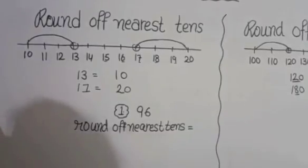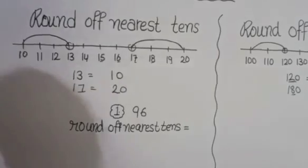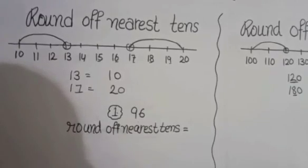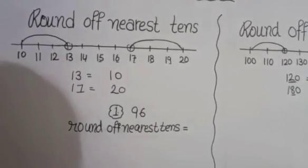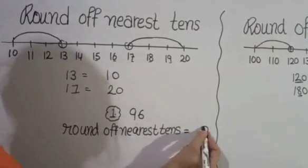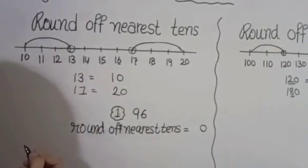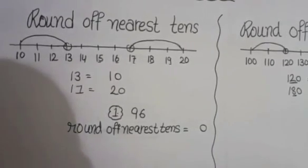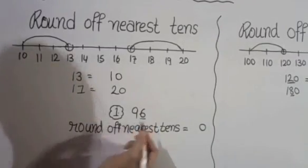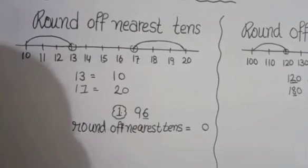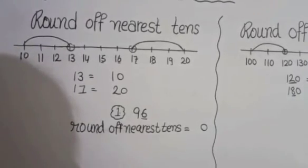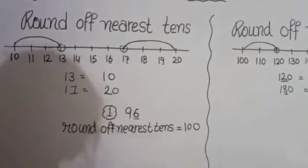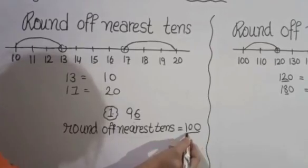Now we have number 96, and we will do round off to nearest 10. If we want to round off to nearest 10, write 0 at the ones place. If we have 5 to 9 at the ones place, add 1 to the tens place. We have 6 at ones place, so we add 1 to the tens place. 9 plus 1 equals 10, so our answer is 100.